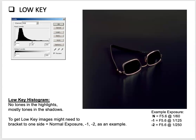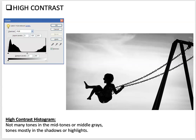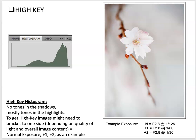Paying attention to both the terminology and the histogram: a high contrast image has very few tones in the midtones or gray areas — mostly tones in the shadows or the highlights. In a silhouette photograph, for example, it's exposed for the highlights where the shadows turn into complete darkness. We don't want to confuse high contrast with high key, which has a very different histogram and a very different type of image. Make sure we pay attention to the vocabulary and terms for this week.